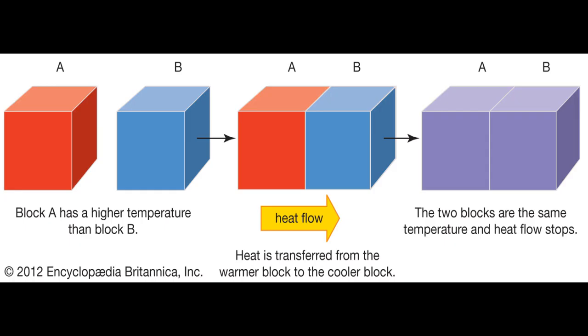When a thermometer touches another object, heat is transferred from the warmer object to the cooler object until their temperatures are equal. If the thermometer gains thermal energy from its surroundings, the liquid in the thermometer expands. The liquid contracts if the thermometer loses thermal energy to its surroundings.